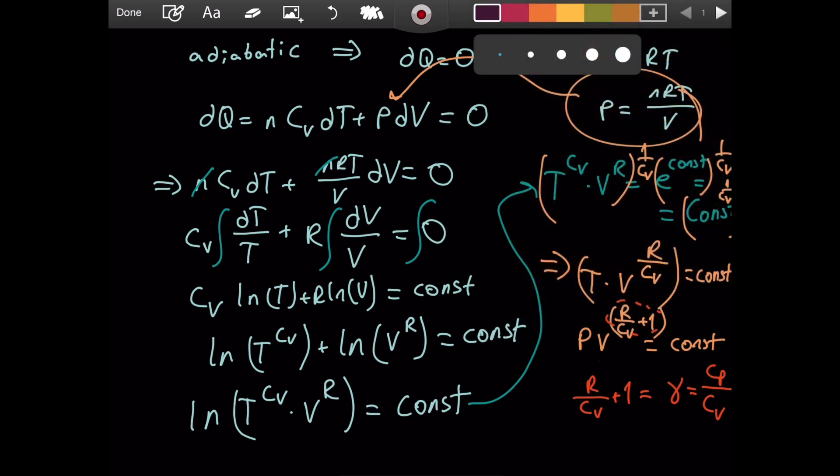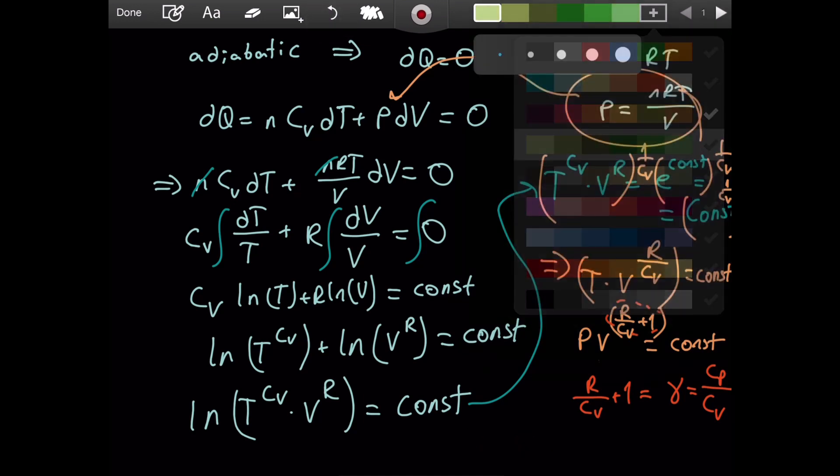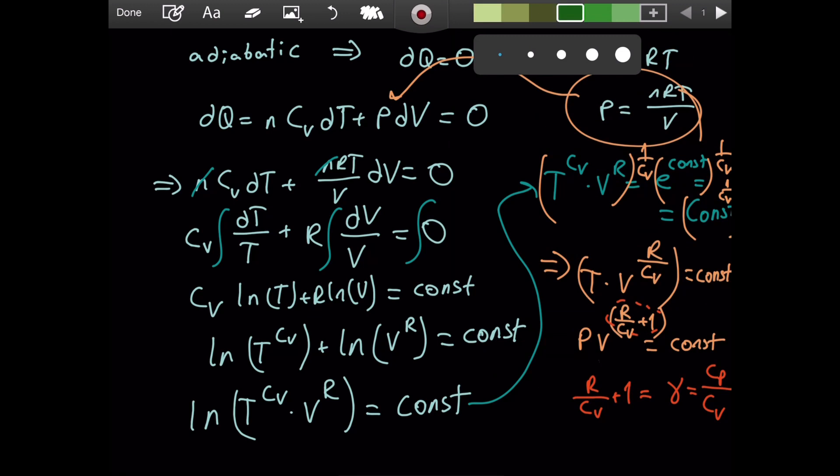The formula that we tried to derive all along is very famous. You will probably never forget it if you do enough thermodynamics problems. It is that P times V to the power of gamma is a constant for adiabatic processes.